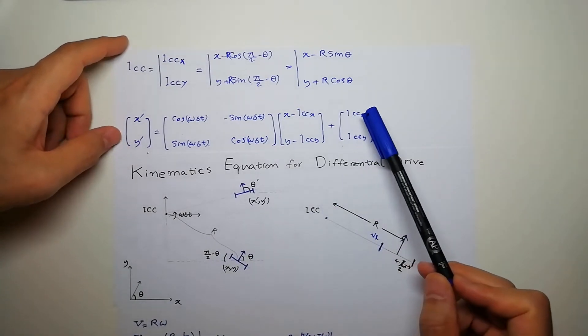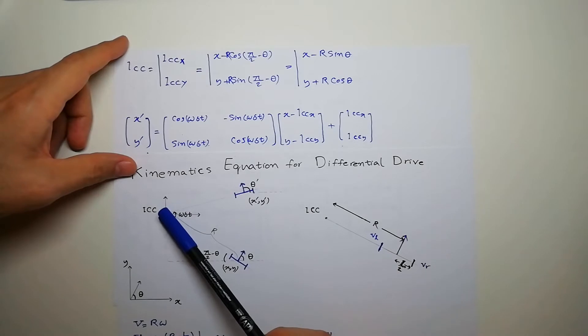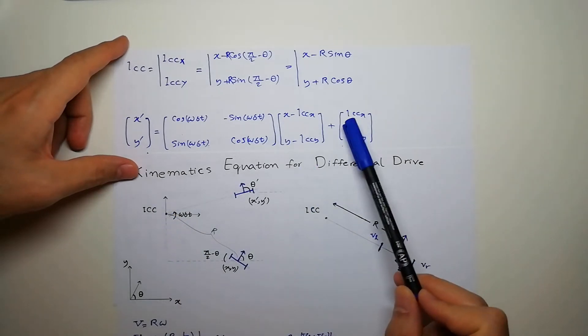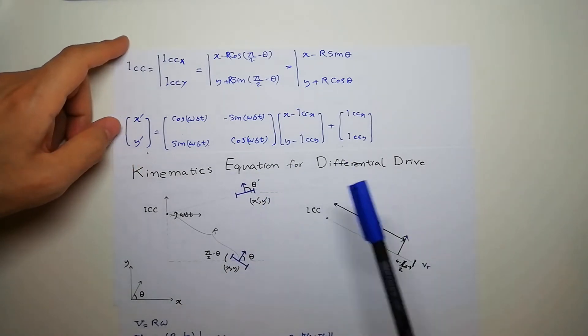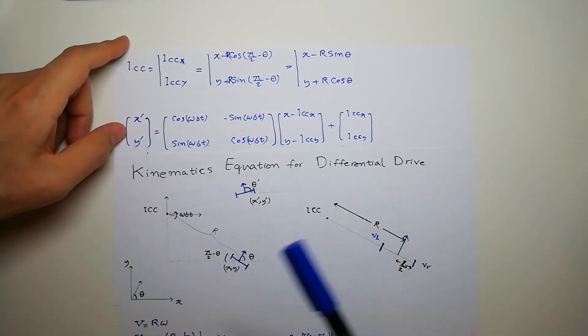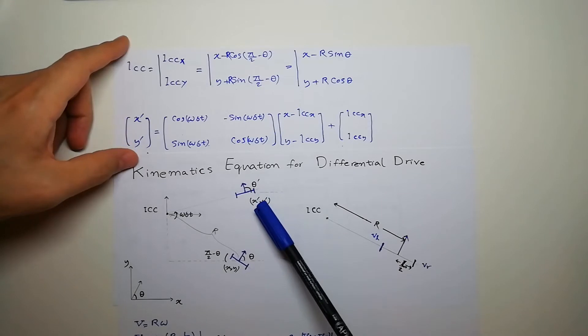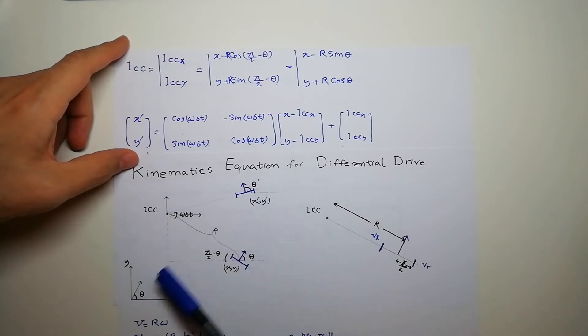And if we add this distance, the pose of the ICC in the world coordinate, we can get the pose of the robot X prime and Y prime actually in the world coordinate. So X prime and Y prime are the position in the world coordinate.